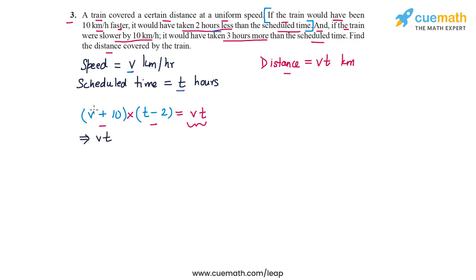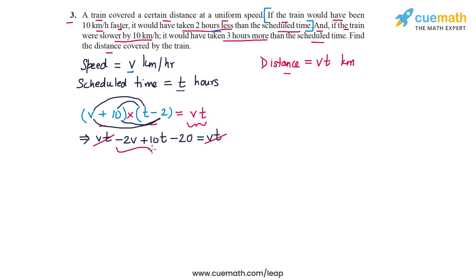Expanding the product (v + 10)(t − 2): we get vt, then v times minus 2 which is minus 2v, then 10t, and 10 times minus 2 which is minus 20, all equal to vt. The vt terms cancel out, leaving the linear equation: minus 2v plus 10t minus 20 equals 0. This is our first equation in v and t.